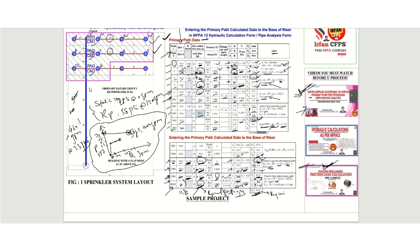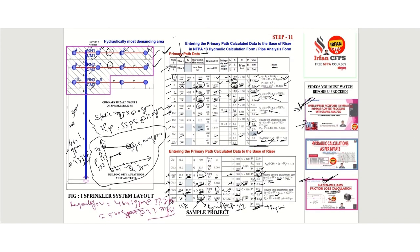In conclusion, the required flow for this project is 464.1 GPM at 33.7 psi. We may consider a fire pump with a capacity of 500 GPM at 33.7 psi. I hope you have learned more than a typical engineer and designer in the fire protection industry. If you enjoy these videos, please subscribe to my YouTube channel, Irfan CFPS. I have 11 years of experience in the fire protection design industry and hope you enjoyed this video series. Thank you, and goodbye.